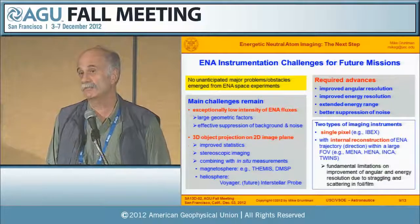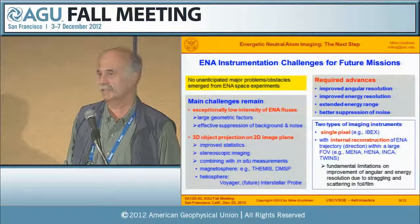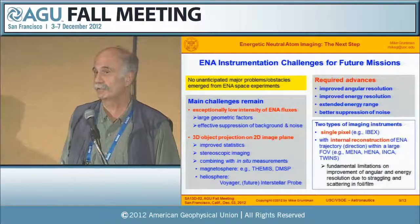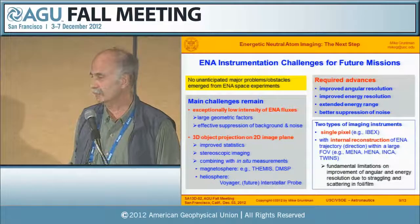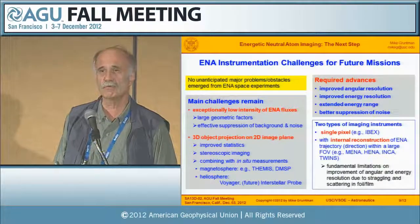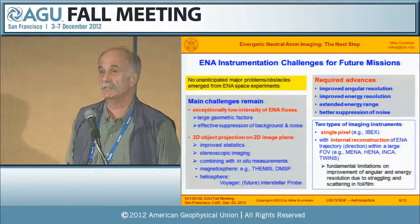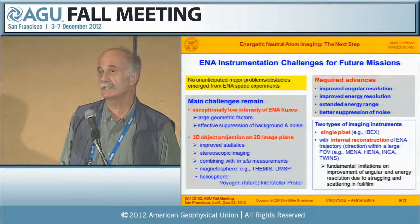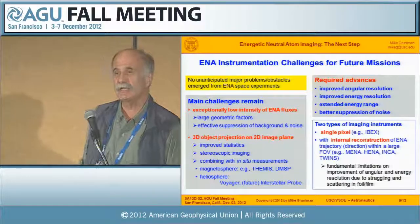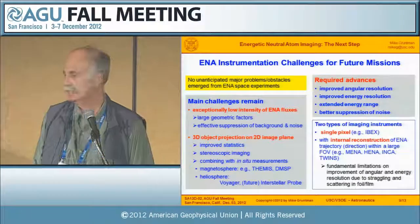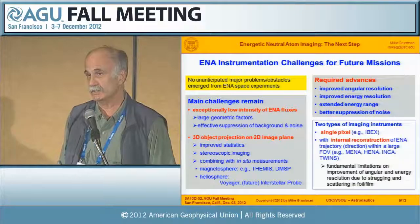In the heliosphere, Voyager provides some data at the heliospheric interface, and an interstellar probe in the future could provide similar information. Required advances include improved angular resolution, improved energy range extending to high energies, and better suppression of noise.